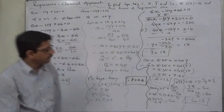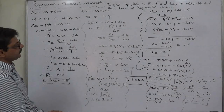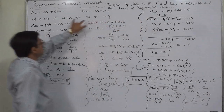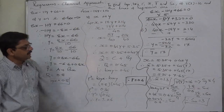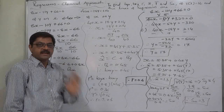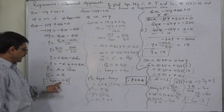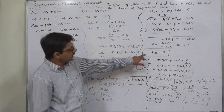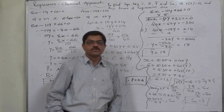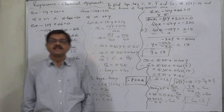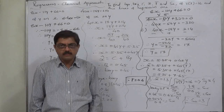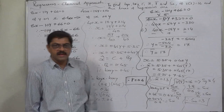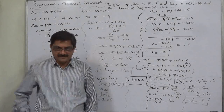In this way, on the basis of just two equations and the variance of y, we found six different things: the coefficient of regression of y on x, the coefficient of regression of x on y, the coefficient of correlation, ȳ, x̄, and the standard deviation of x. As far as examinations are concerned, this is a very important question and is frequently asked in board and university examinations. Thank you very much.